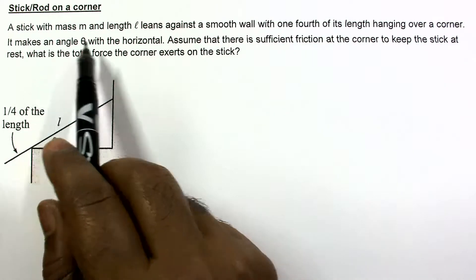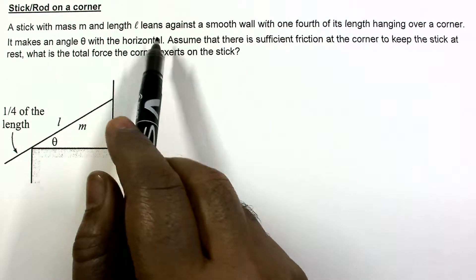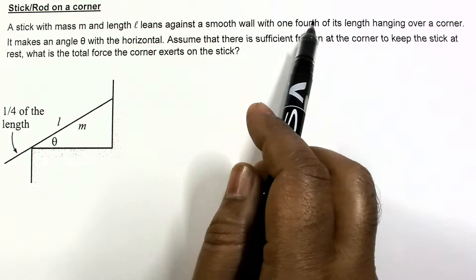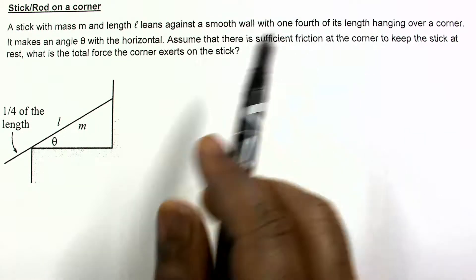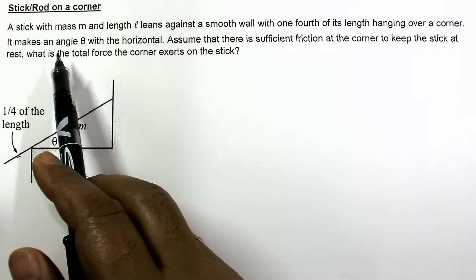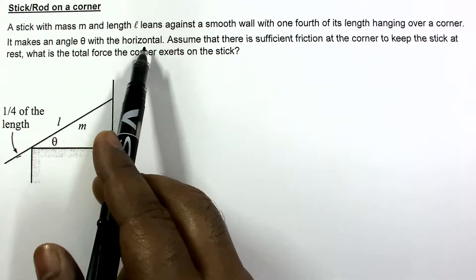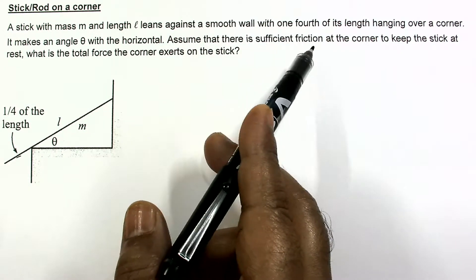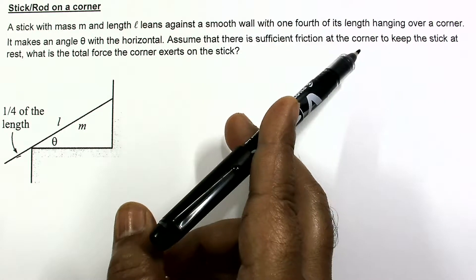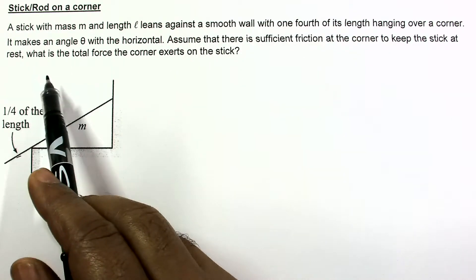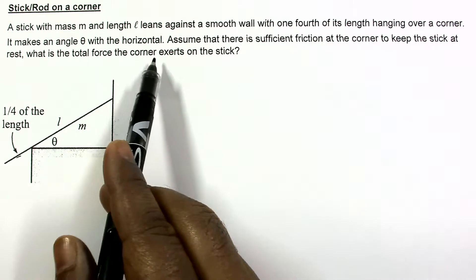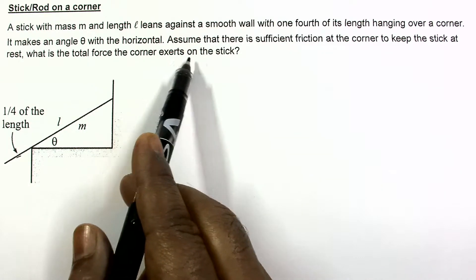In this problem, a stick with mass M and length L leans against a smooth wall with one-fourth of its length hanging over a corner. It makes an angle theta with the horizontal. Assume that there is sufficient friction at the corner to keep the stick at rest. What is the total force the corner exerts on the stick?